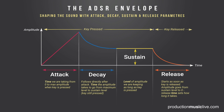Once we're releasing the key, what follows is the release time, taking the signal back from whatever level we were playing, back to zero. Sometimes you want to do that very short. Sometimes you want it longer to just fade out your sound smoothly. So if you want smooth sounds, in the beginning you have a longer attack time, and for smooth sounds at the end you have a longer release time.